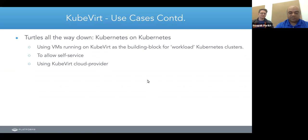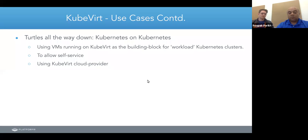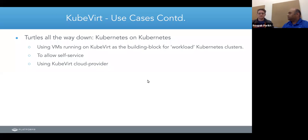There's a really interesting use case we call 'turtles all the way down.' You take a set of physical servers, run KubeVirt on it, create virtual machines, and those VMs are given to users in a self-service way so they can create user-level or workload Kubernetes clusters on those VMs. The Cluster API has a KubeVirt cloud provider that you can use to do this, and it's becoming very popular.